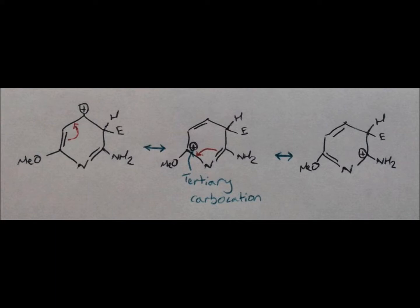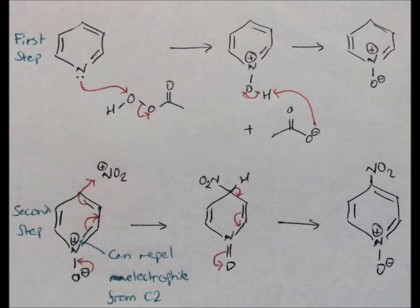Nitrating pyridine itself is a bit more difficult. The ring is oxidised, as shown in the first step. The oxygen ion can donate its electrons into the ring, making it more electron dense and susceptible to electrophilic attack. The reaction with NO2 takes place.